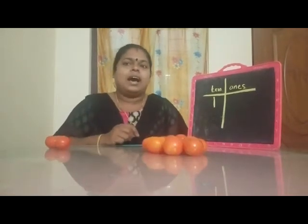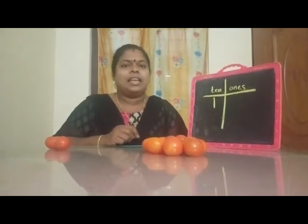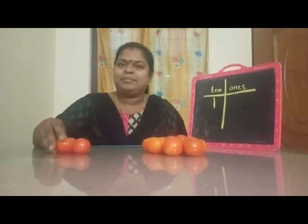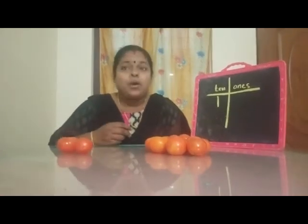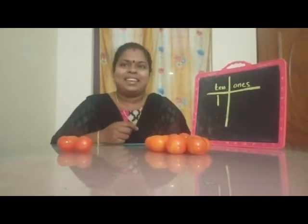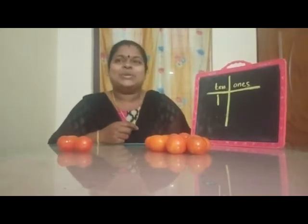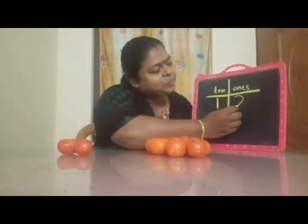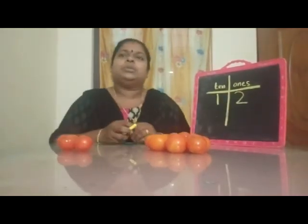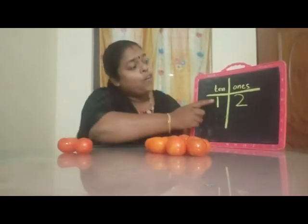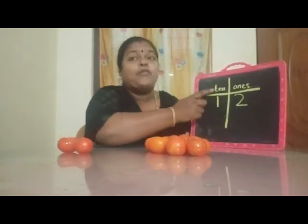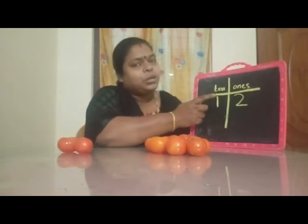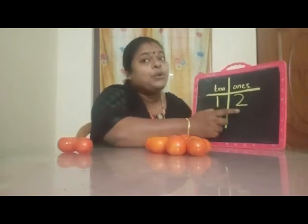Now there are some tomatoes remaining. Let's count: 1, 2. How many tomatoes are remaining? Yes, 2. Let's write 2. Now we have 1 group of 10 and 2 remaining tomatoes — that is 2 ones.